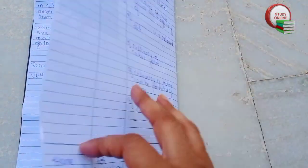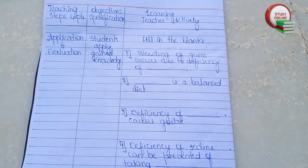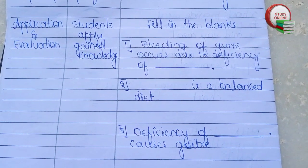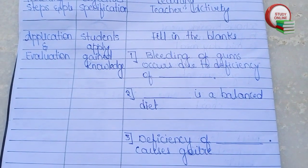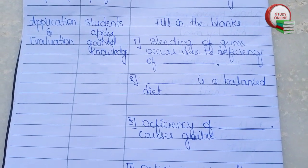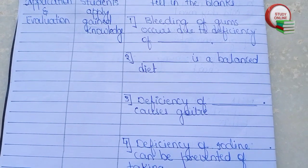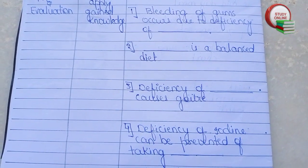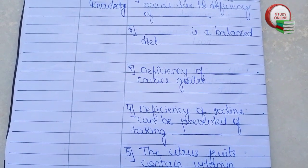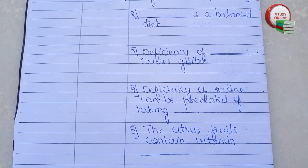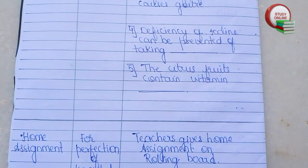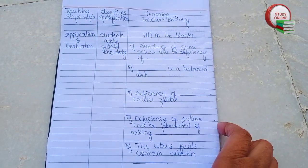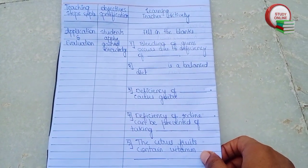Now let's turn the page and see the last part of our lesson plan — application and evaluation. For that, the teacher can give fill-in-the-blanks to students to see how much they have understood. Here you can see five fill-in-the-blanks we can give to students. The teacher can give these on the blackboard or rolling board. This way we can make our lesson plan.